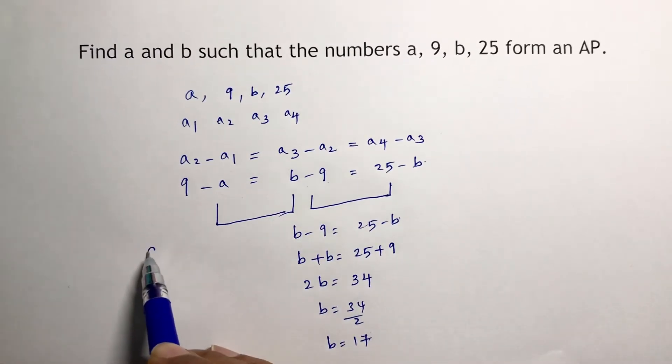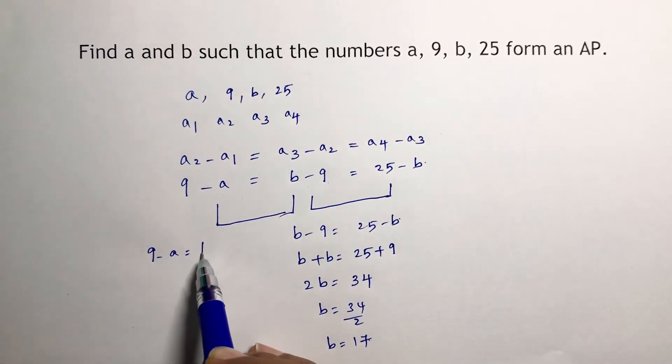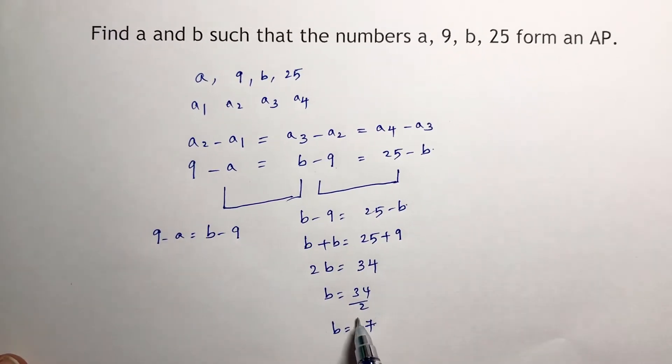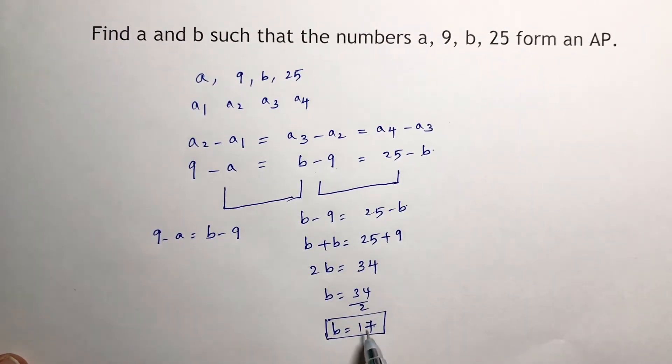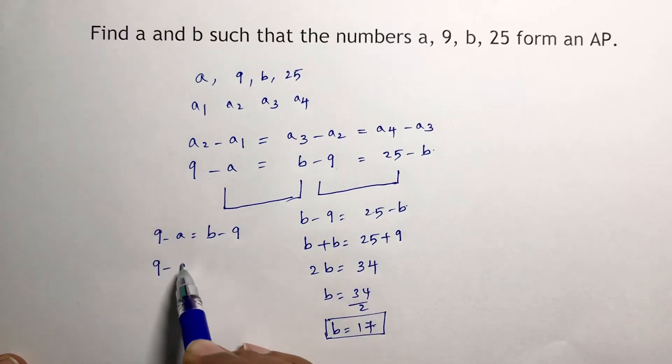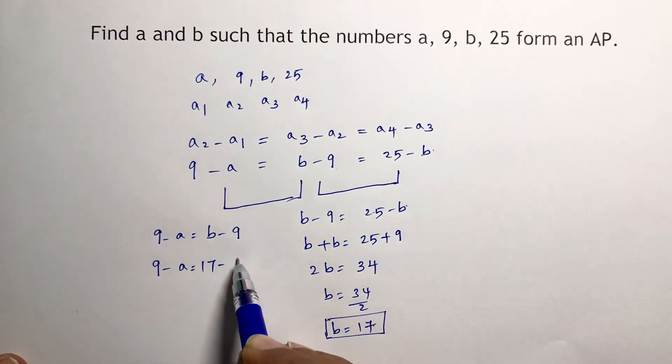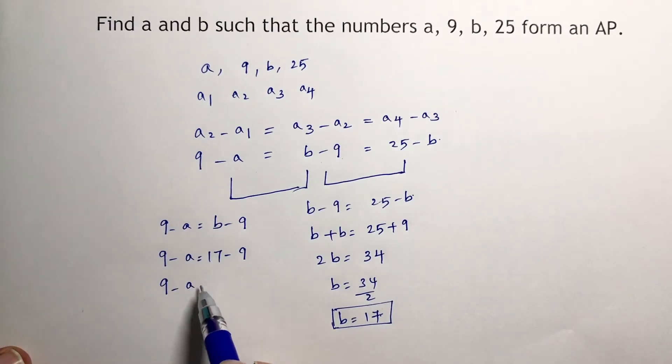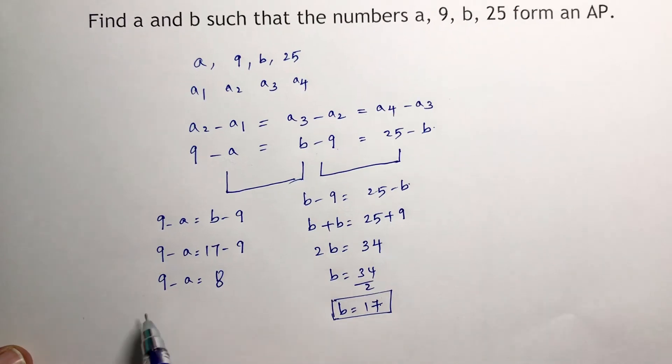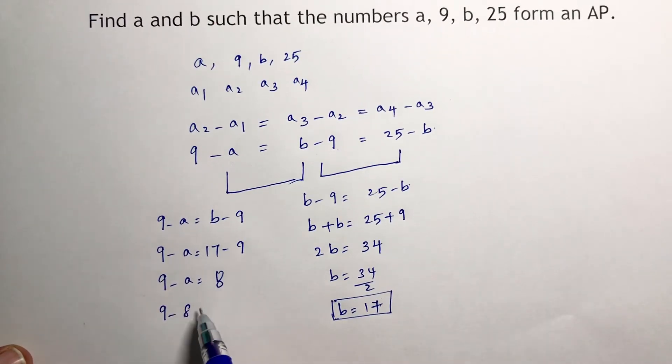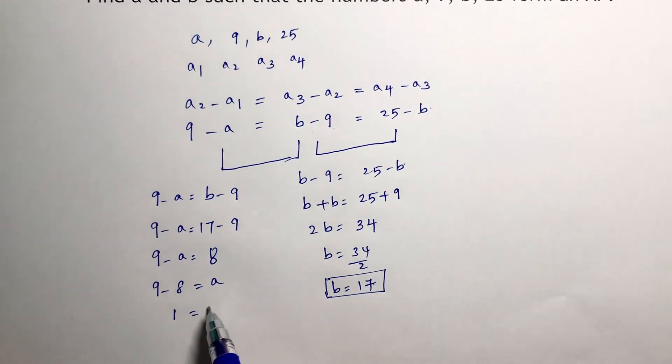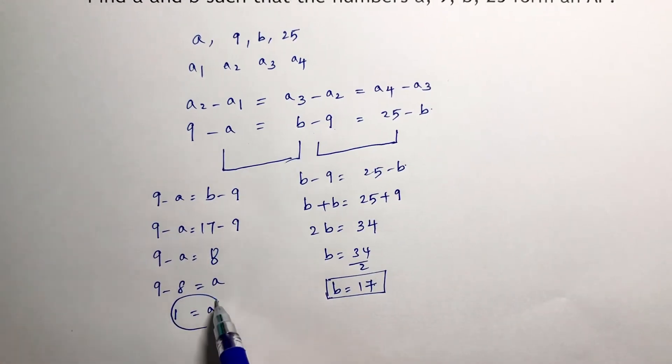9 minus a equals b minus 9. So the value of b is 17. Substitute here: 9 minus a is 17 minus 9, which is 8. So 9 minus 8 equals a, therefore 1 equals a. So you got the values of a and b.